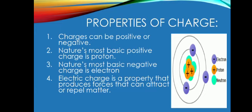Properties of charge. As we know, charges are in two types: positive and negative. Nature's most basic positive charge is proton. Nature's most basic negative charge is electron. You can see in the diagram, electron has negative charge and proton has positive charge. Electric charge is a property that produces forces that can attract or repel matter.